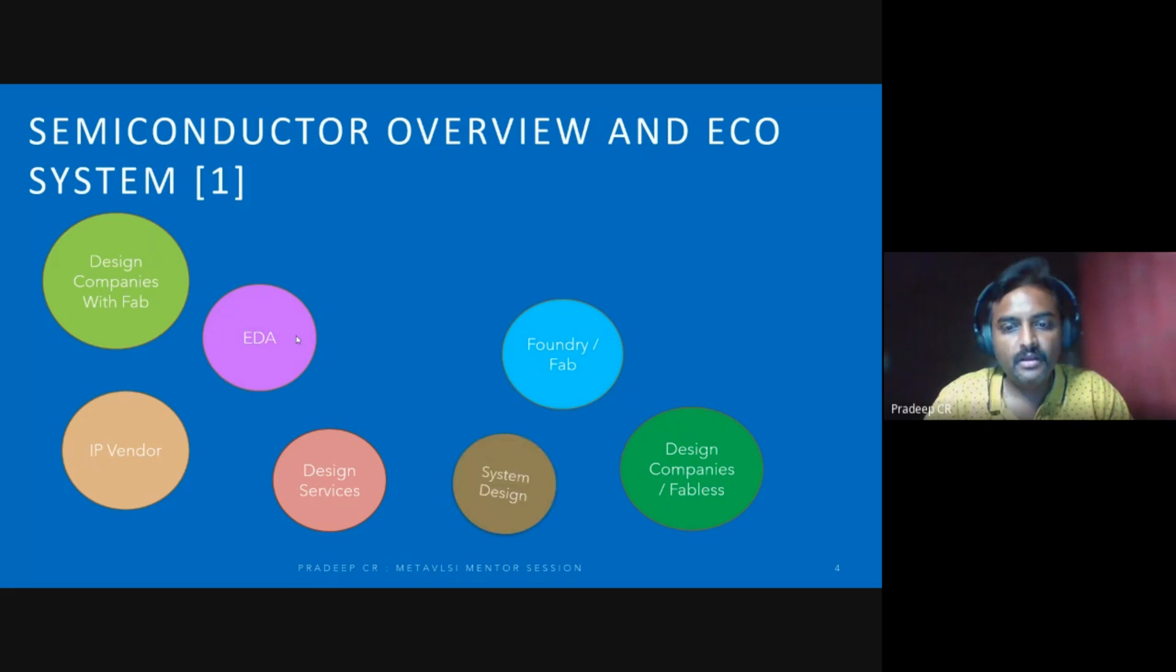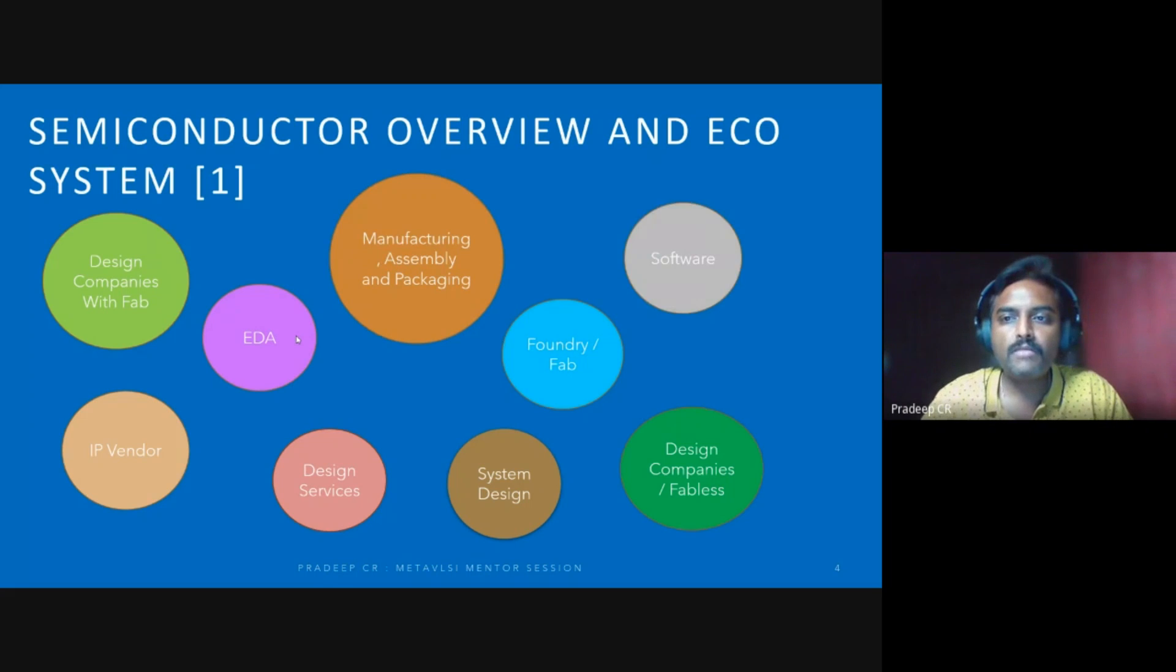These are all chip level, then comes system design actually. Once your VLSI chip is ready or semiconductor chip is ready, then you have to integrate other parts of the systems - that's where system design comes into the picture. And then you have manufacturing, assembly and packaging. Of course software - without software you can't complete the system - you need software integration. This forms the ecosystem.